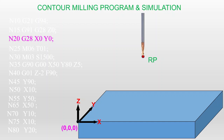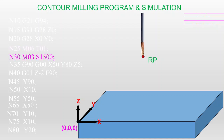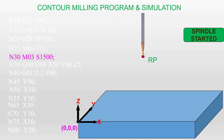Then you can change the tool: M06 T01 — the required tool is changed here. After changing the tool, you set the spindle speed and start the spindle. The spindle speed is set to 1500 RPM and it rotates in the clockwise direction — the spindle is started.